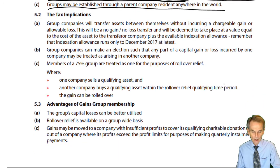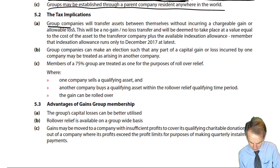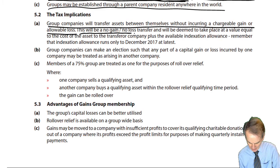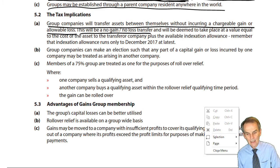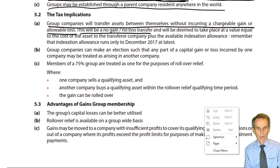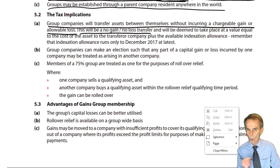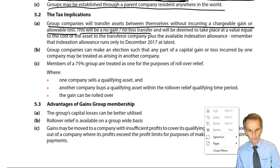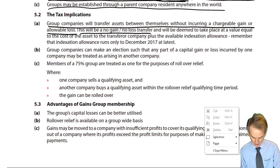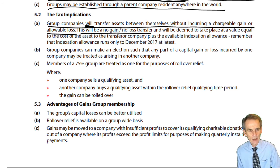What are the tax implications? Group companies will transfer assets between themselves without incurring a chargeable gain or allowable loss — this will be a no-gain, no-loss transfer. This is the corporate equivalent to transfers between spouses or civil partners. Here, just like with spouses and civil partners, members of the same 75% gains group will transfer assets to one another — but a chargeable asset will be transferred on a no-gain, no-loss basis. This is a rule — not a claim, not an election — it is a rule.